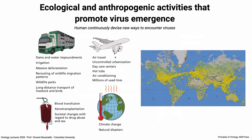Air travel and urbanization are major factors. Daycare centers are a recently devised way to get lots of kids together to share viruses, then bring them home to their parents. Hot tubs improperly sanitized spread viruses, as does air conditioning and millions of used tires — which harbor mosquitoes in small bits of water. Climate change is changing ecosystems and increasing the spread of mosquitoes, and even natural disasters alter the viruses that are around.